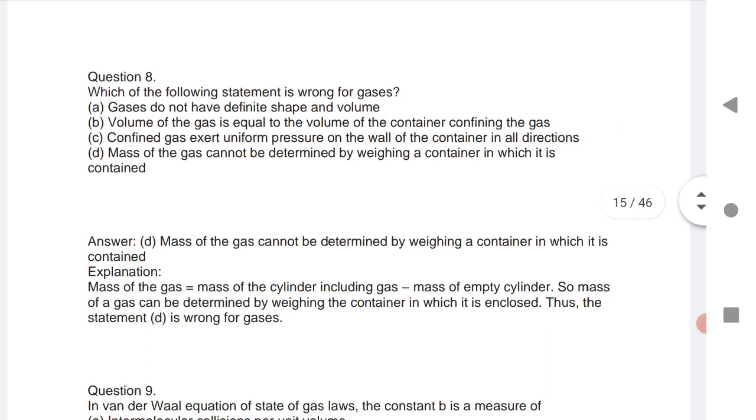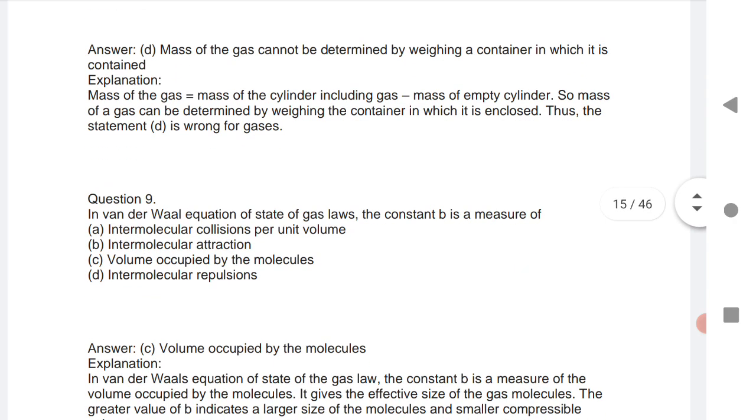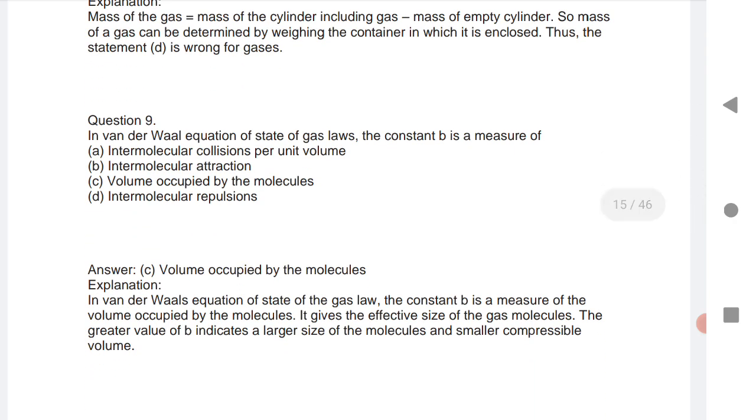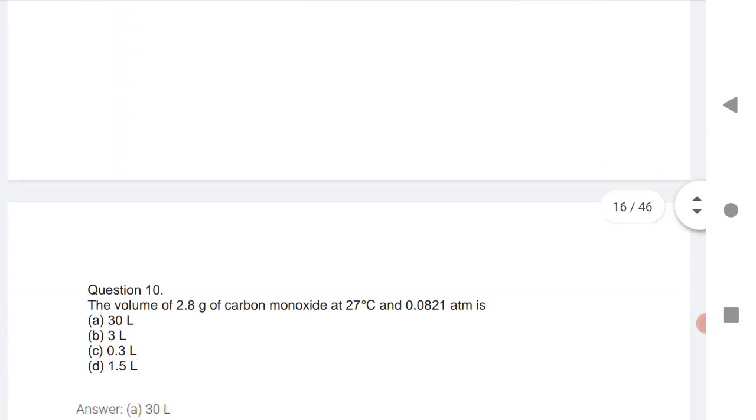Next is: which of the following is wrong for gases? Mass of gas cannot be determined by weighing a container in which it is contained - very important question. Next is: in van der Waals equation of state of gas law, the constant b is a measure of volume occupied by the molecules. Very important question.